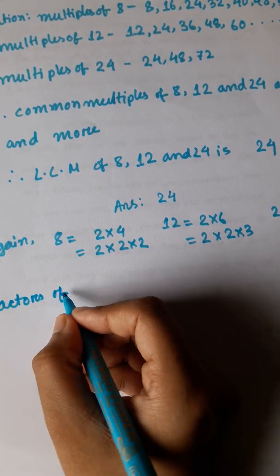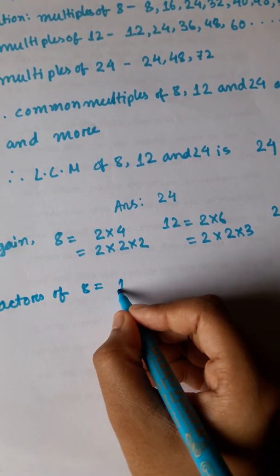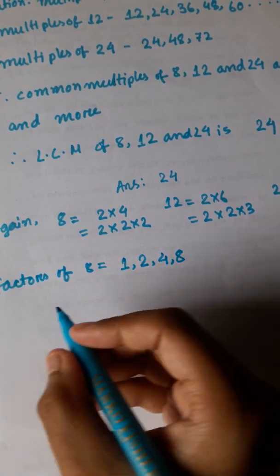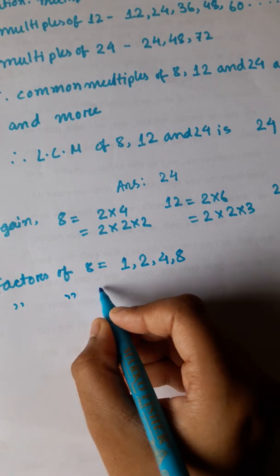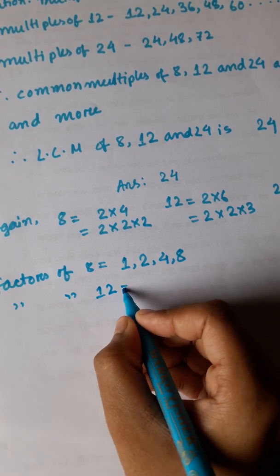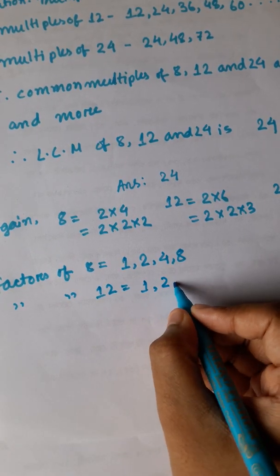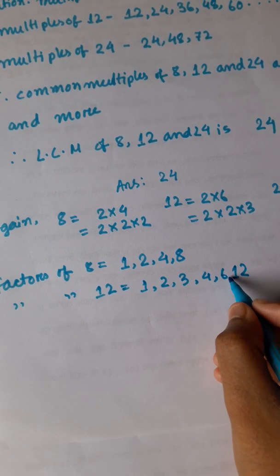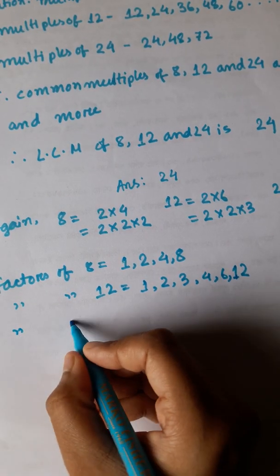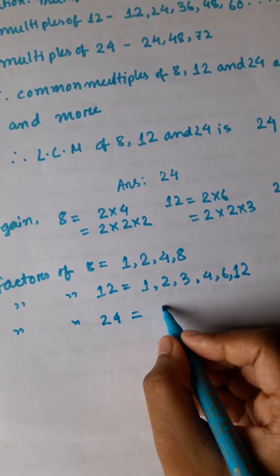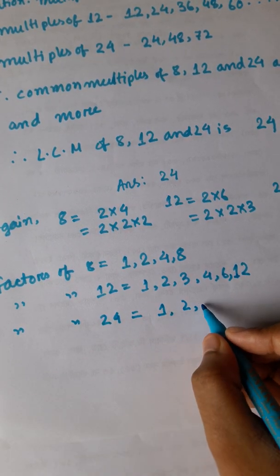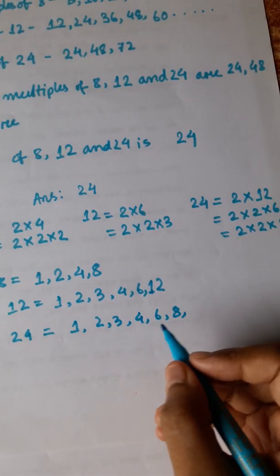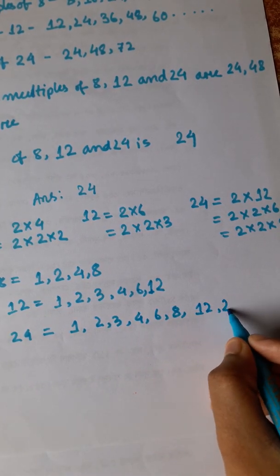Factors of 8 are: 1, 2, 4, 8. Factors of 12 are: 1, 2, 3, 4, 6, 12. And factors of 24 are: 1, 2, 3, 4, 6, 8, 12, 24.